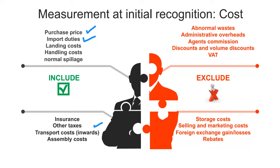The purchase price is straightforward — it's obviously part of cost. Non-reclaimable taxes are those taxes we cannot get back from SARS, which is why we excluded VAT. VAT must be excluded because it can be claimed back via input VAT — when we charge output VAT, we net the input VAT off and pay SARS the net amount. So in a sense, we are claiming back that input VAT.